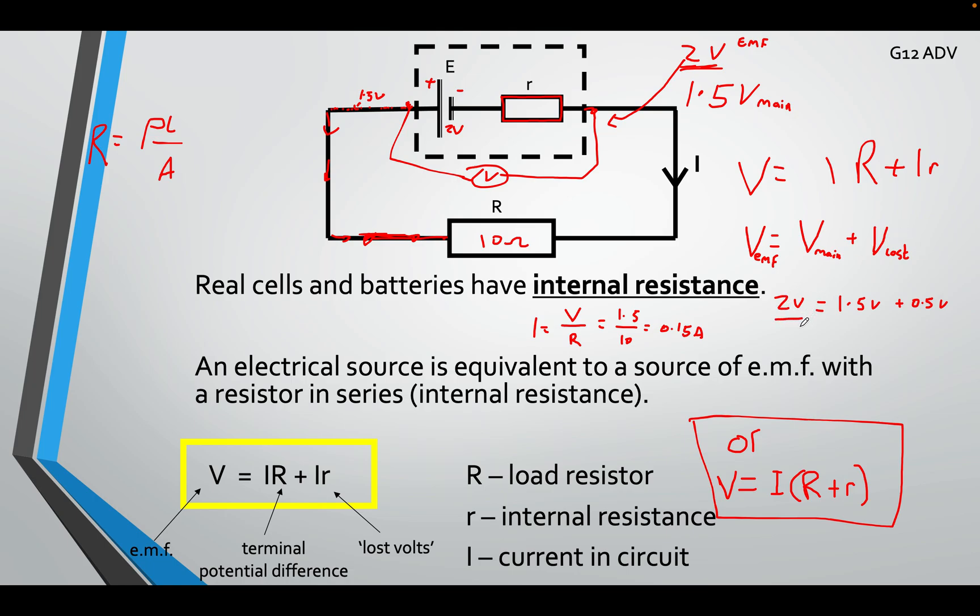Coming from the battery, I said it would have been 2 volts. But the voltmeter told me it was 1.5. So that, of course, means the remainder was 0.5. V EMF equals V main plus V lost.